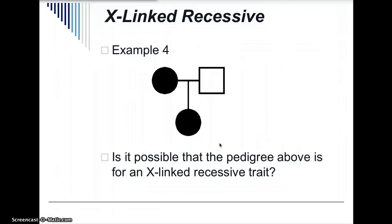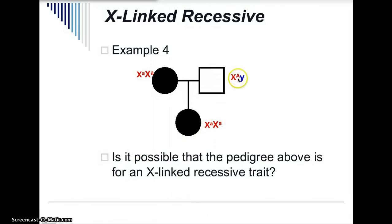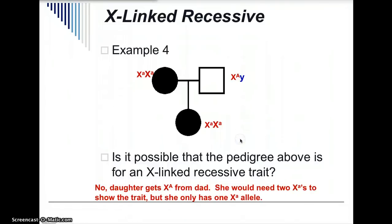Is it possible that this pedigree is for an X-linked recessive trait? The mom has two recessive alleles, and the dad has a dominant allele on his X chromosome and his Y chromosome. He passes his X chromosome to the daughter, who also gets one from the mom. The daughter's genotype would have to look like this if it was X-linked recessive, but that's not possible because the dad does not have a recessive allele to pass to his daughter. She would need two recessive X alleles to show the trait, but she only has one. So it's not possible that this is X-linked recessive.